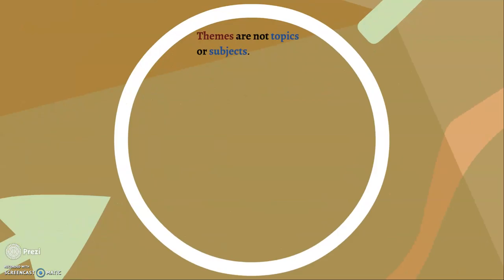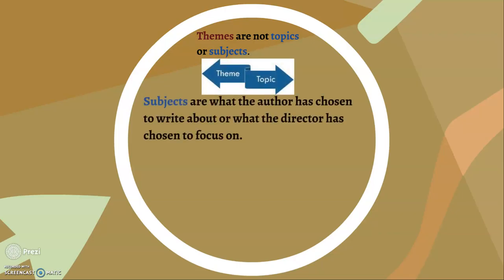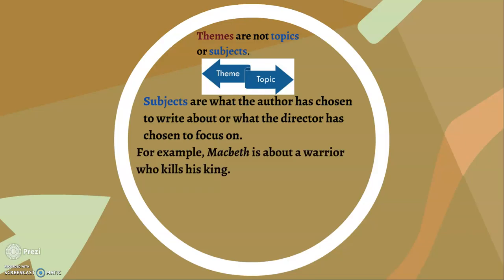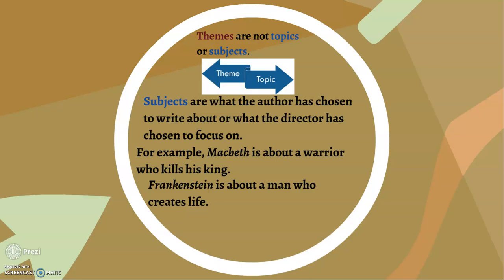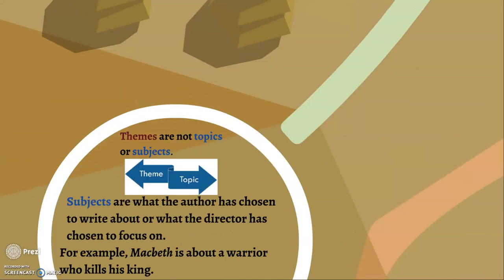Another confusion I see is topics and subjects versus themes. Themes are not topics or subjects — completely different ideas. Subjects are what the author has chosen to write about or what the director has chosen to focus on. For example, Macbeth is about a warrior who kills his king — we could just summarize the topic. It's about a man who creates life. That's the subject of the work, not the theme. There is no meaning here, because it's just what we're talking from — a plot point, topic point, subject point. What is it about? Well, it's about this. But what's it really about? That's what we're getting at when we talk about theme.